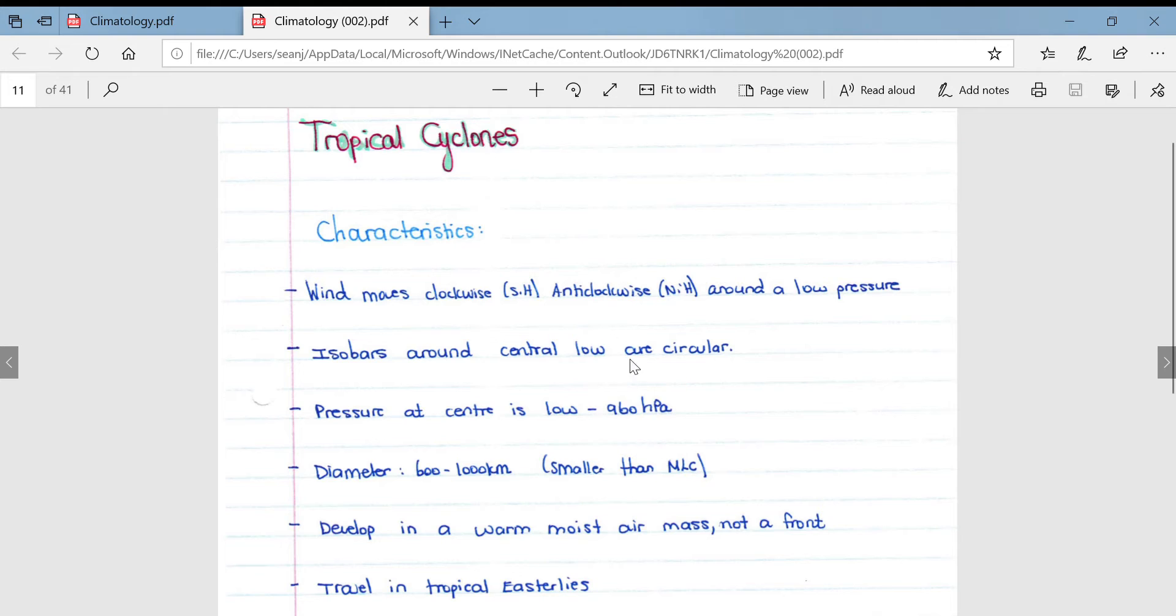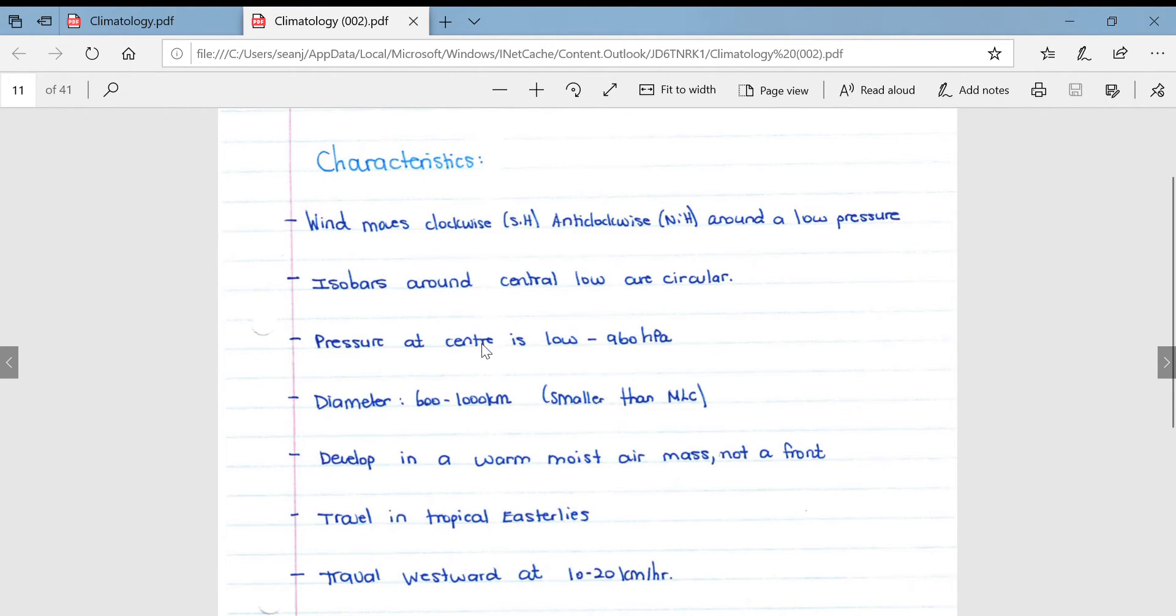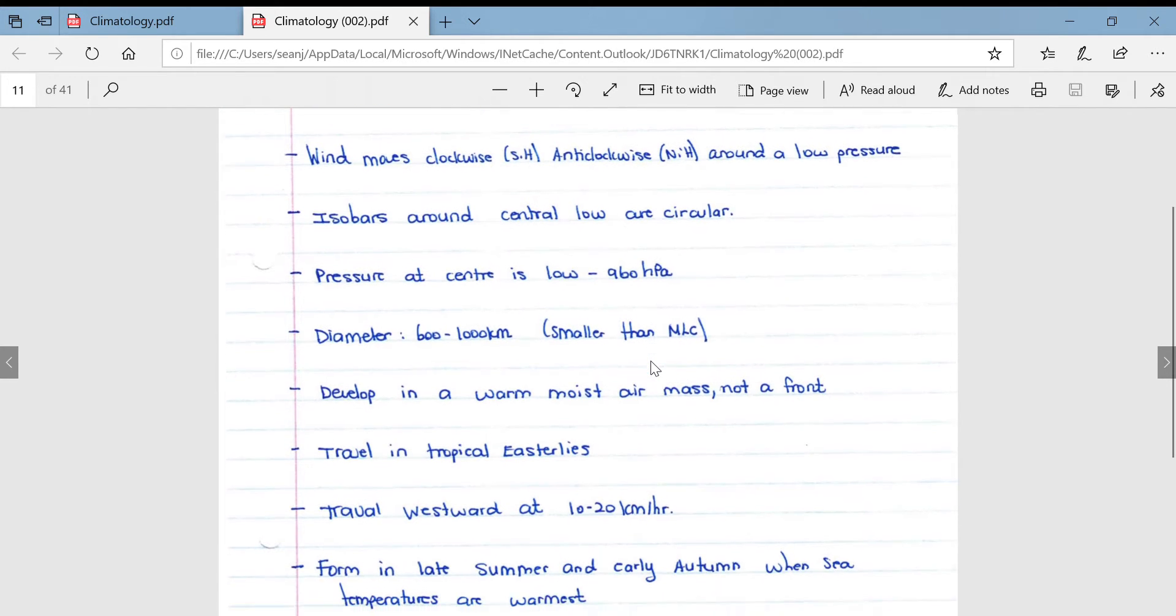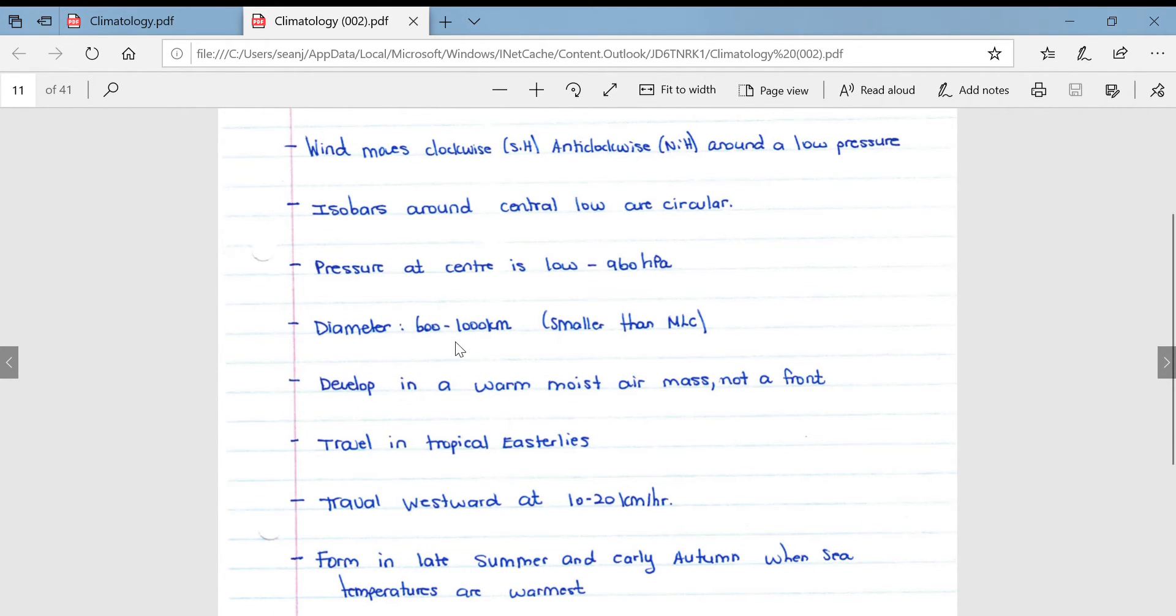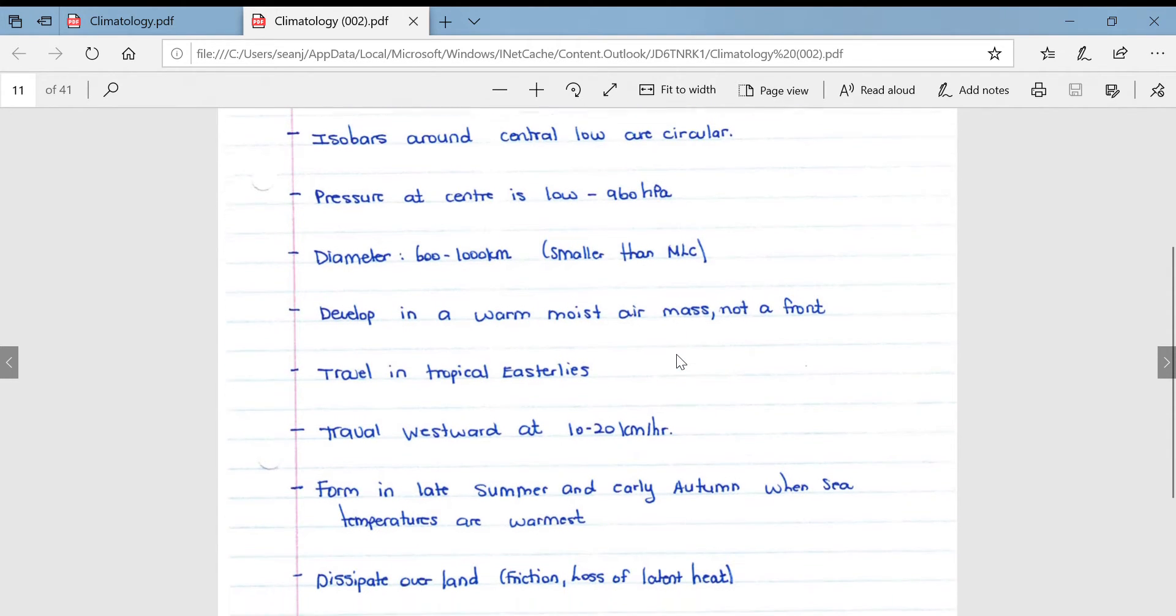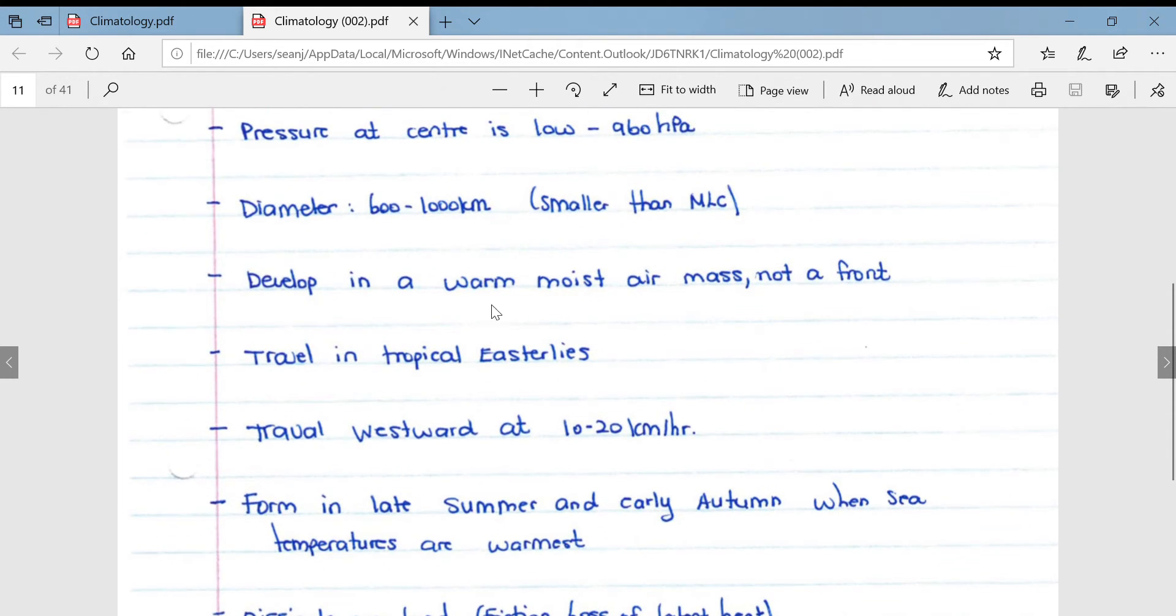The pressure at the center is very low, about 960 hectopascals. Note that the pressure at the center is often a lot lower than mid-latitude cyclones. The diameter is between 600 and 1000 kilometers, therefore it's slightly smaller weather systems than mid-latitude cyclones.